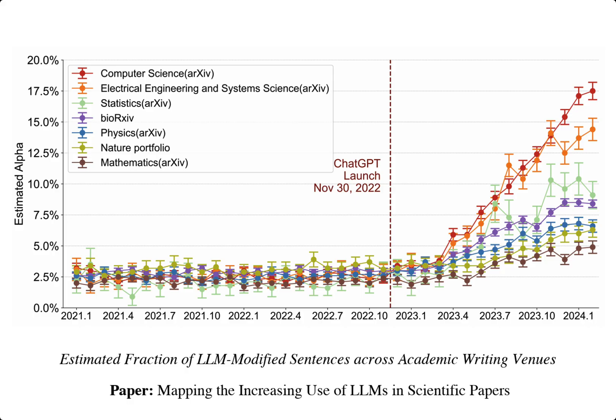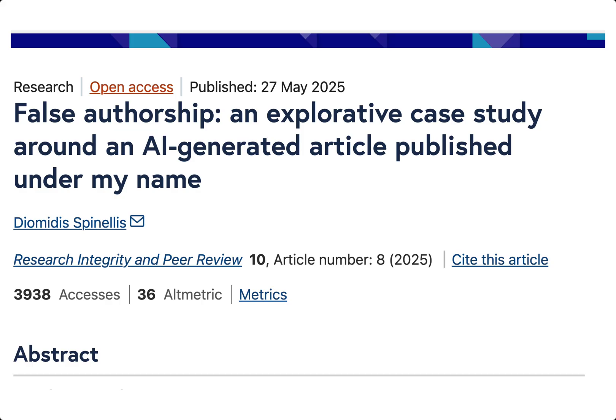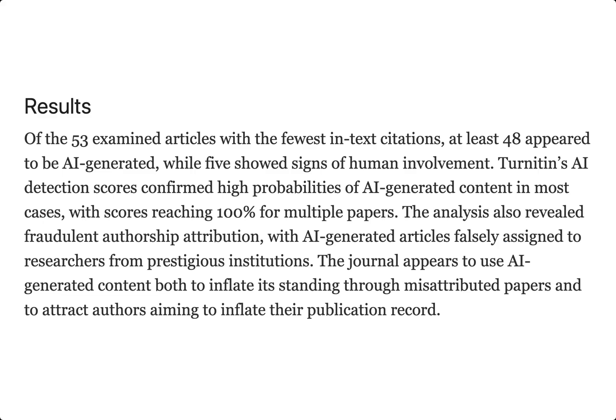We see the problem of verification debt in many places, for example in academic journals, where difficult-to-detect AI is finding its way into articles, and this usage is increasing. Generative AI is being used to produce AI slop academic papers, incentivized by journals and authors looking to inflate numbers. A researcher discovered a journal had published an AI-generated paper under his name without his knowledge, and found dozens more fake papers, many falsely credited to real scientists. Scholarly peer review remains a pillar of scientific knowledge, and verification debt poses a real and growing threat to its integrity.